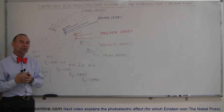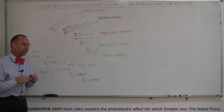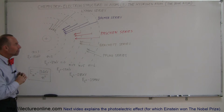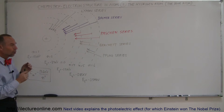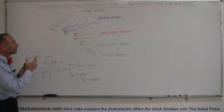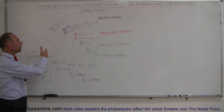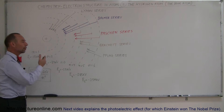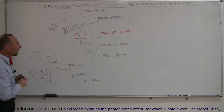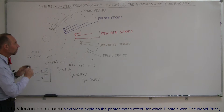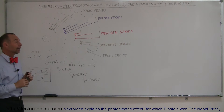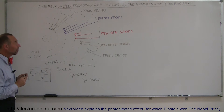The Bohr atom is named after Niels Bohr, who was a very famous physicist. He came up with the quantization levels of energy around the Bohr atom, envisioned them, and drew this plan out. Of course, he did have a lot of help from other scientists.